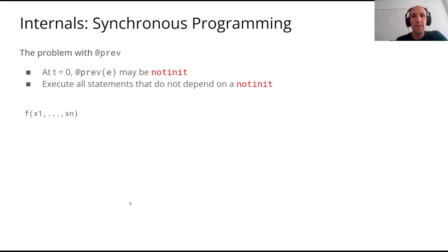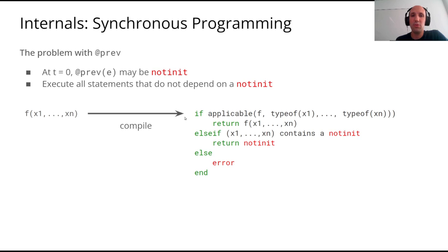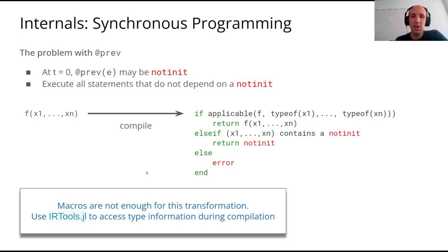When using the macro prev there is an issue: you need to check that the variable e has been initialized. If it's not initialized — typically at time t0 — then you don't want to execute the code and you want to propagate this not-init type into the rest of your program. We use IR tools to do this transformation because macros are not enough; you need access to type information during compilation.